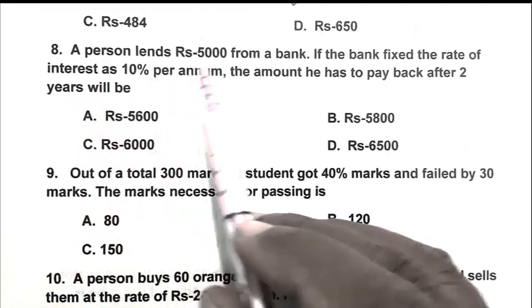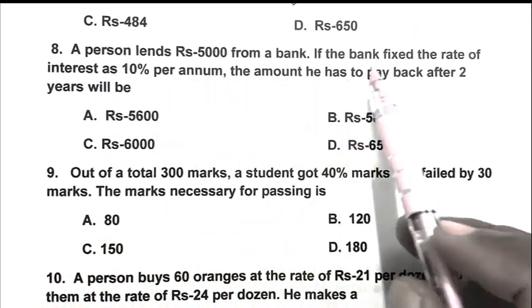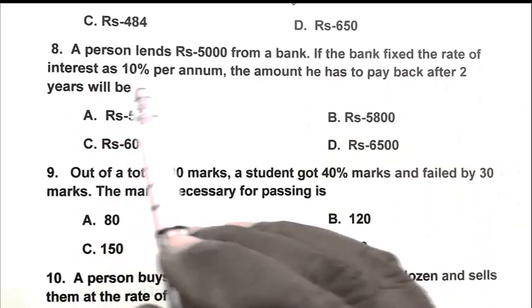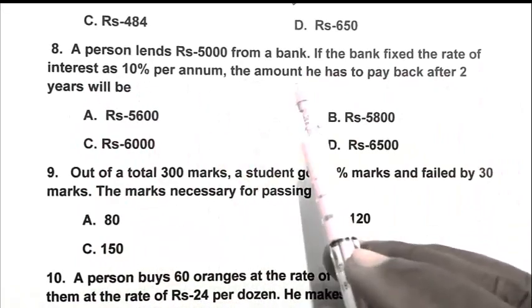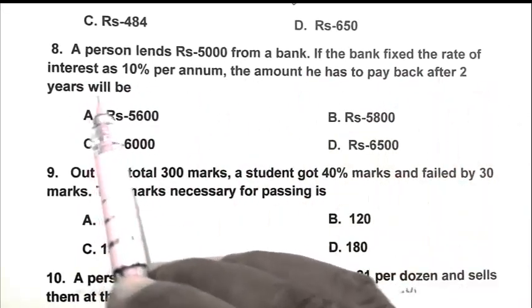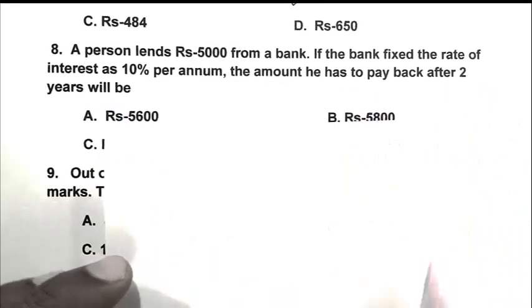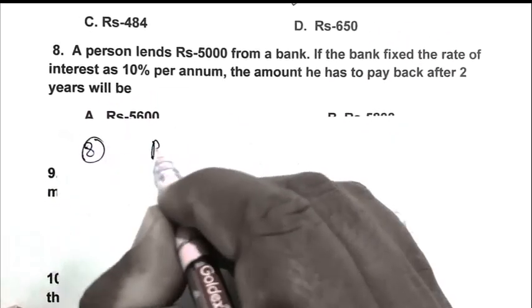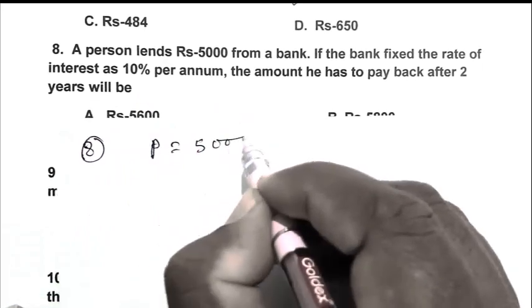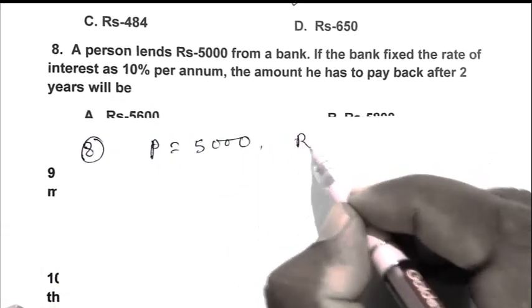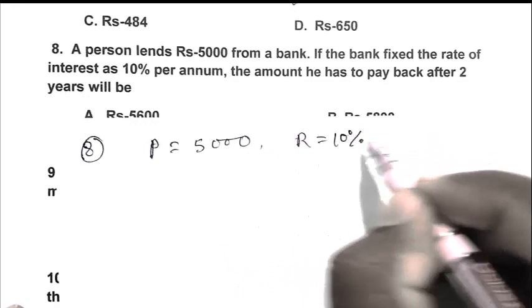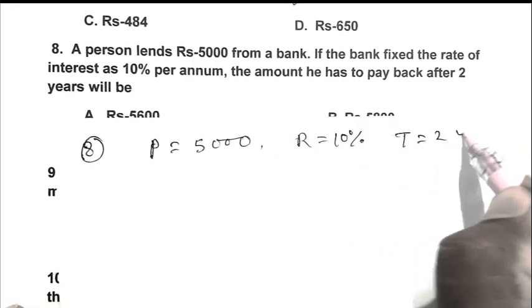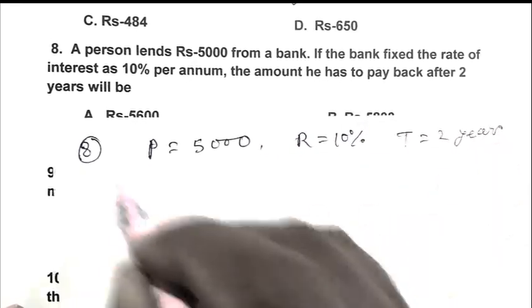Q8. A person lends Rs. 5000 from a bank. If the bank fix the rate of interest as 10% per annum, the amount he has to pay back after 2 years will be. So friend, we can calculate it simply by formula. So principal that is 5000, rate that is 10% and time that is 2 years.